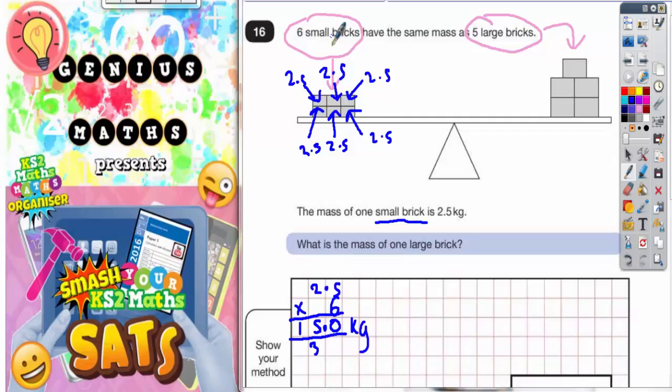So the six small bricks have a total weight of 15.0 kilograms. Now it does say that the five large bricks have the same mass.